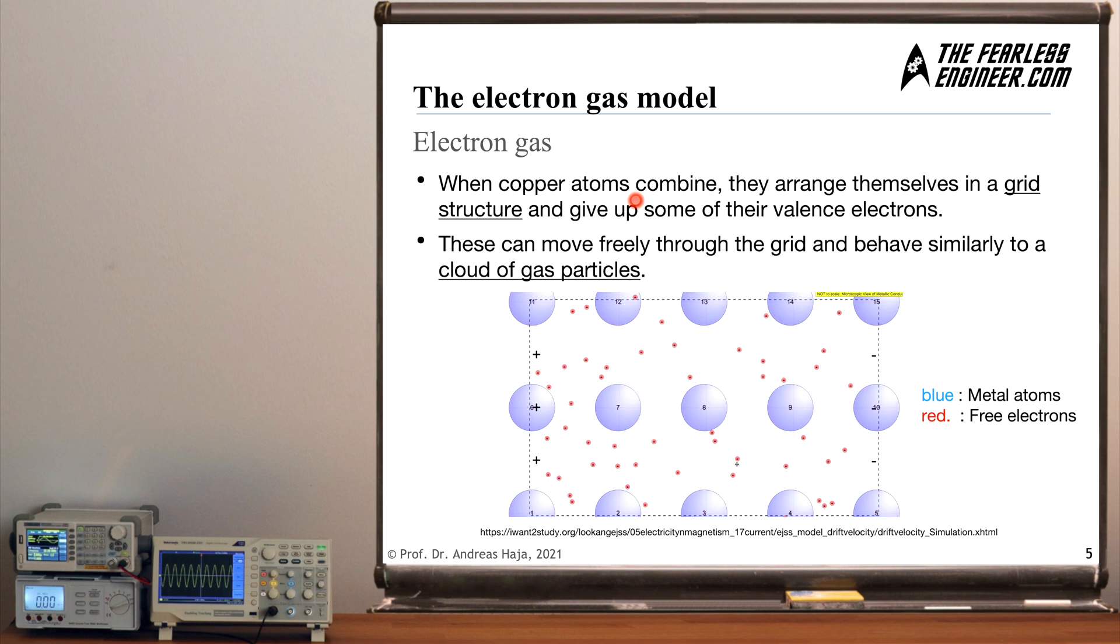Now, when several copper atoms combine themselves, for example to form a copper cable, you will find that they arrange themselves in a grid-like structure, and in doing so, they give up some of their valence electrons. So the outermost electron is freed when several atoms combine into a compound, and these freed up electrons can move about freely through the spaces in between the atoms.